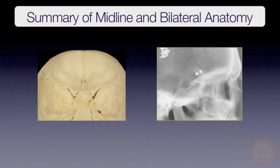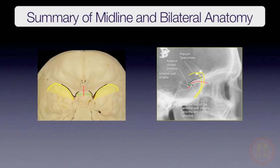In review, the structures used to perform a cranial-base superimposition are the anterior wall of sella, its intersection with the inferior portion of the anterior clinoid processes, the planum sphenoidale, and the greater wings of the sphenoid. Anteriorly, we rely upon the cribriform plate and the ethmoidal crests. Superiorly, we use the cerebral surfaces of the orbital part of the frontal bone.